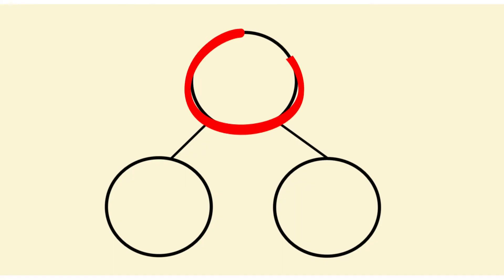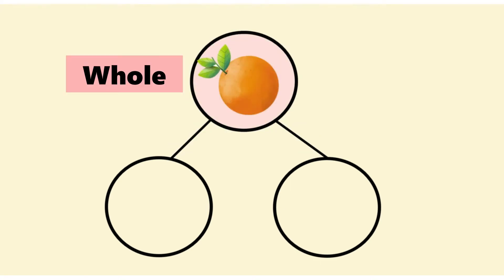Right, this circle has two lines coming out from it. This is where we will put our whole. The other two circles is where we will put our parts.